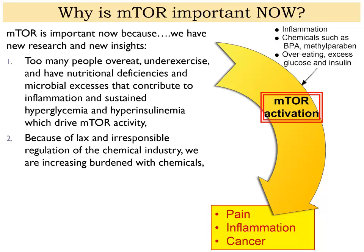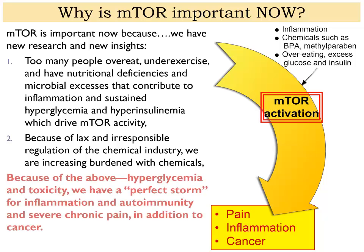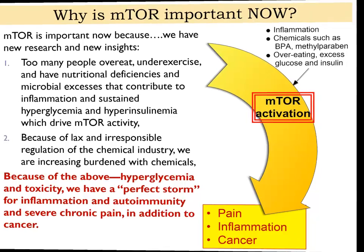All of that activates mTOR, and then mTOR takes us downstream to pain, inflammation, and cancer. Because of hyperglycemia, toxicity, and microbes, we basically have a perfect storm for inflammation, autoimmunity, severe chronic pain, and cancer.